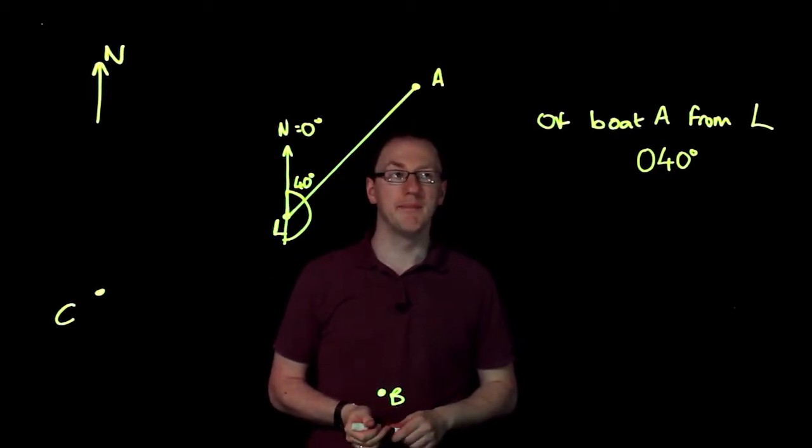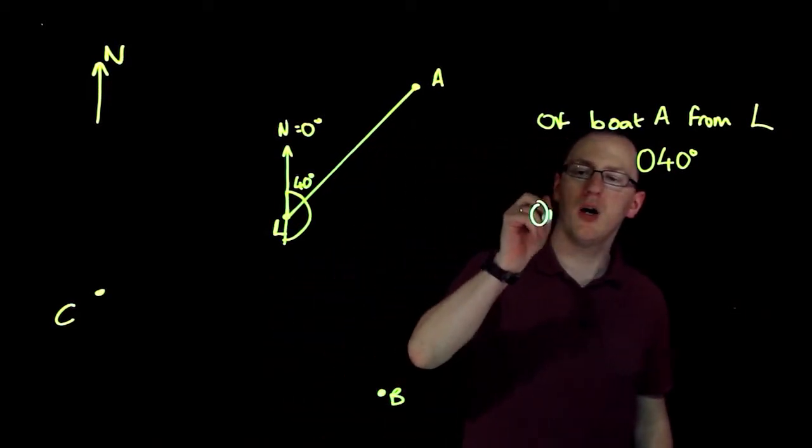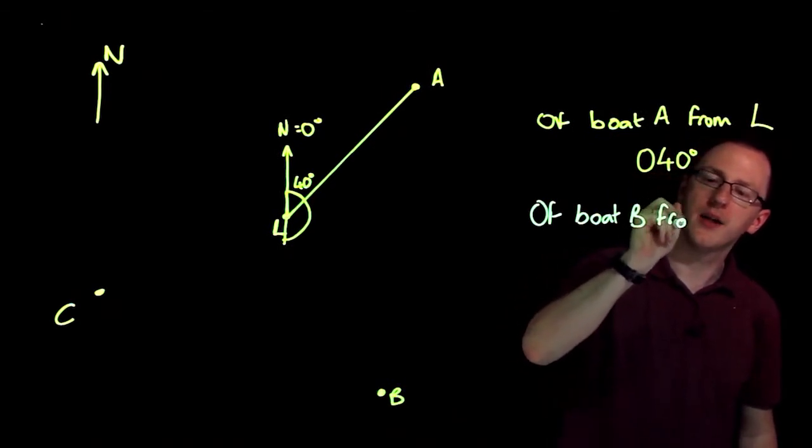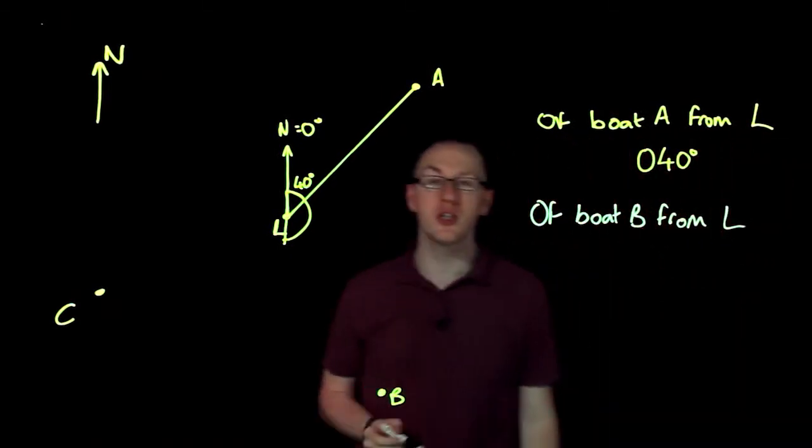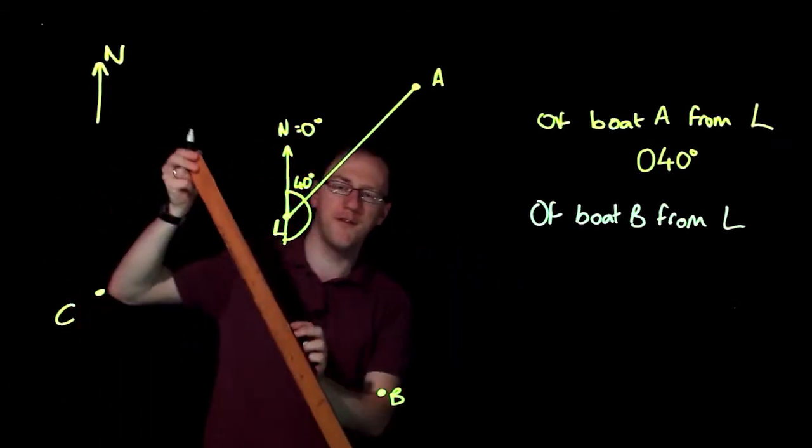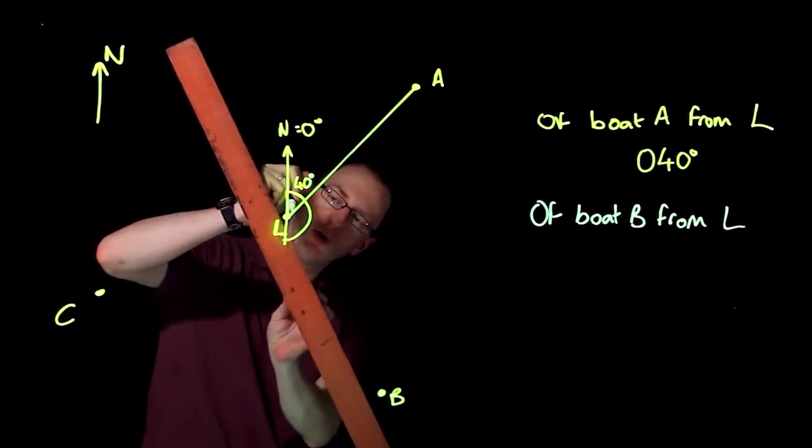What about boat B? I want to know the bearing of boat B from the lighthouse again. So from the lighthouse, that's where I'm starting. That's where I'm facing north. So I want to draw a line from the lighthouse to boat B.